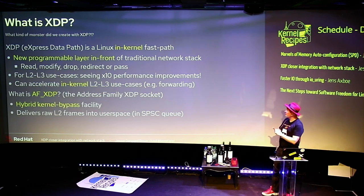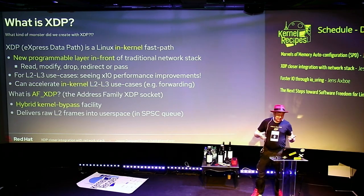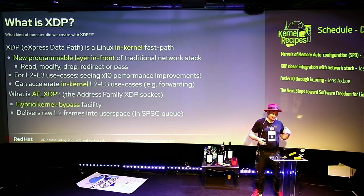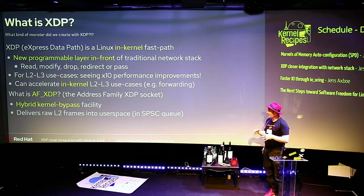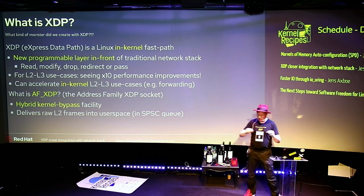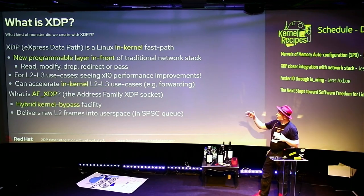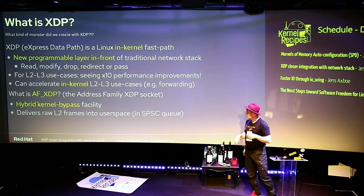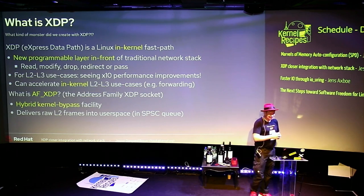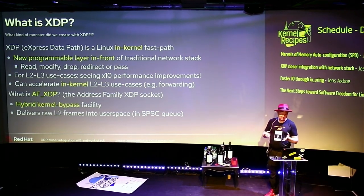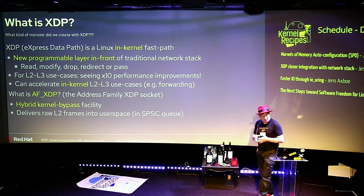So what kind of monster did we create in the network stack? XDP in itself is a new programmable layer in front of the traditional network stack — you actually put a whole layer in front of the network stack. I don't know how David accepted that. There we can read, modify, drop, and redirect packets, which are fairly heavy operations, without the network stack seeing this. We do get a really impressive performance boost, and that's, I guess, why we let it in.